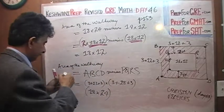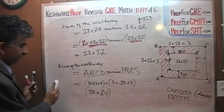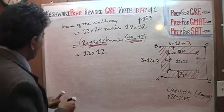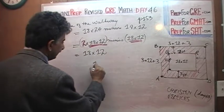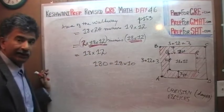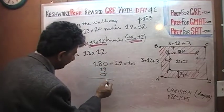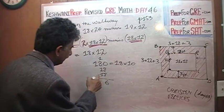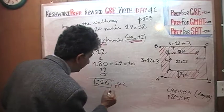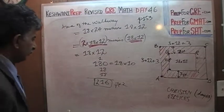So we need 18 times 12. We know 18 × 10 = 180; add two more 18s: 180 + 18 + 18 = 216. The area of the walkway is 216 square feet. That's our answer.